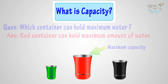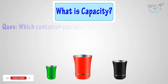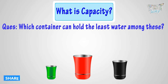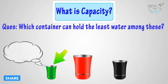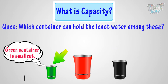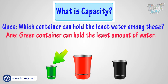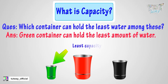Now, which container can hold the least water among these? The green container is smallest, so it can hold the least amount of water. So, the green container has the least capacity among all the containers.